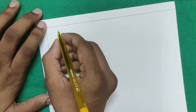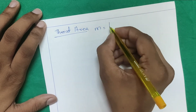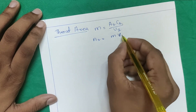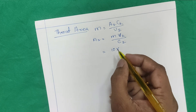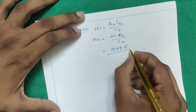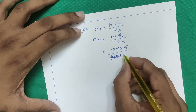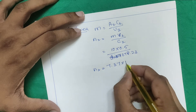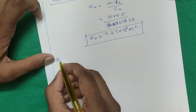To find throat area a2: from mass = a2·c2/v2, so a2 = m·v2/c2. With mass = 10 kg/s, v2 ≈ 0.5 m³/kg, c2 = 678.23 m/s, you get a2 = 7.37 × 10⁻³ m².